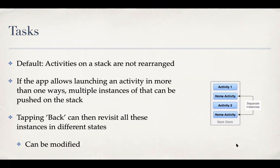But as it's shown in this diagram over here, it is possible to give a special behavior to an individual activity. There can be multiple instances of the activity on the stack in that case, especially if the app allows launching an activity in more than one ways. So in this case, the home activity was started by clicking the launcher button. Then you go to activity two from the home activity. And let's say from activity two, you are able to launch the home activity again.